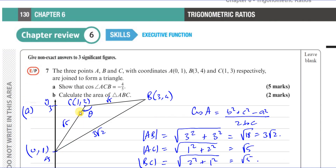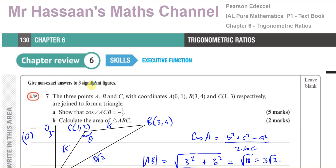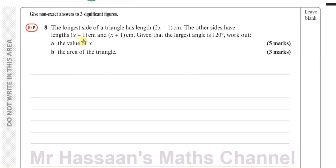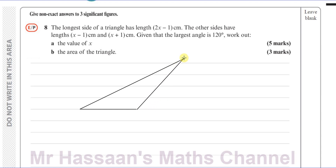The student also asked me to answer question 8 from the same exercise. Question 8: the longest side of a triangle has length 2x − 1, the other sides have length x − 1 and x + 1. Given that the largest angle is 120 degrees, calculate the value of x. The largest angle is always opposite the longest side, so the 120° angle is opposite the side of length 2x − 1.